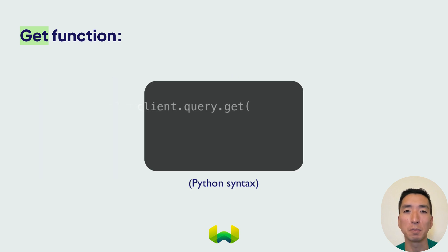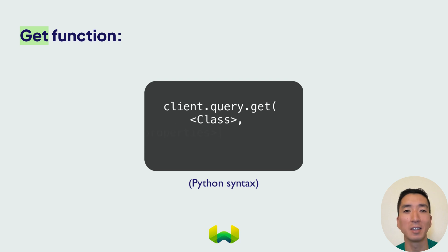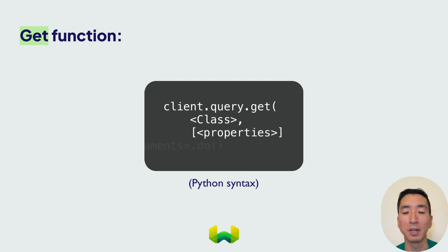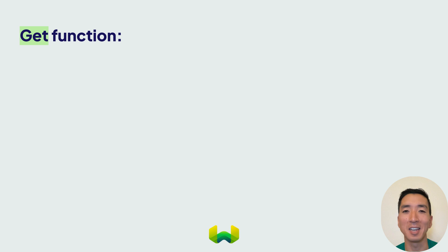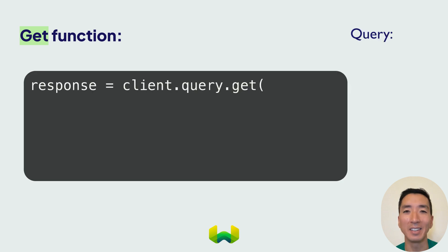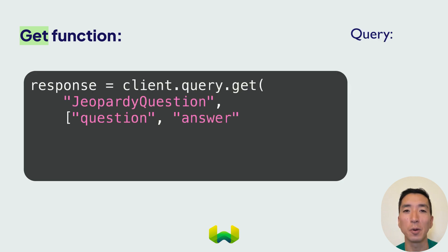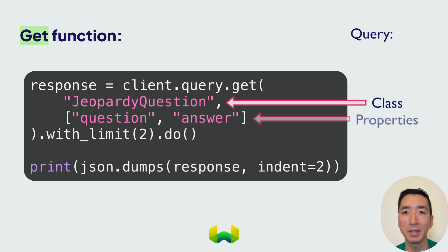To use it, you need to specify the class of objects you want to retrieve. This is a term in Weaviate for collections of objects. And you also need to specify the properties to retrieve for each object. Let's look at an example of a basic standalone get query. In this case, we're querying this class for the shown properties, with a limit of the number of results as shown here.